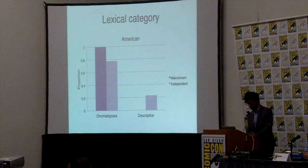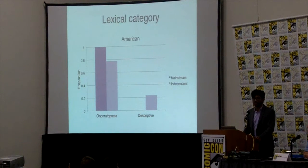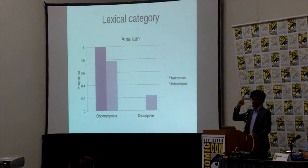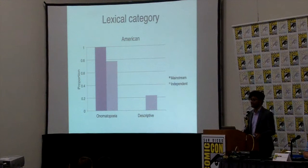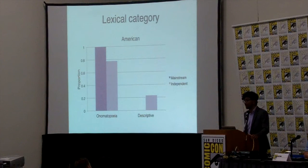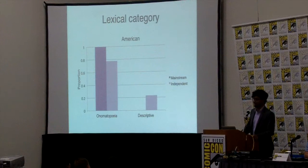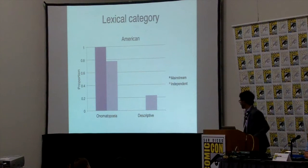What did we find about the proportions of lexical categories in each culture and genre? For American genres, we had the rather startling revelation that there are zero — literally zero — instances of descriptive onomatopoeia in mainstream works. This aligns with the general idea of comics, since most people haven't seen that kind of thing in everyday superhero comics. On the other hand, sound effects in independent works, while still predominantly onomatopoeia, have a good chunk — around 20% — that are descriptive.